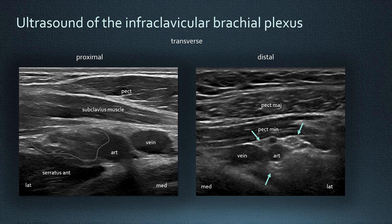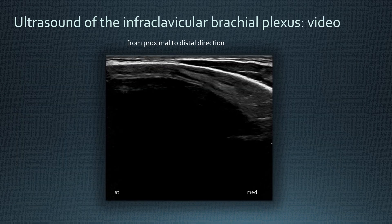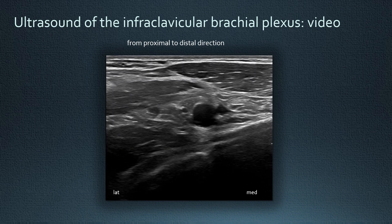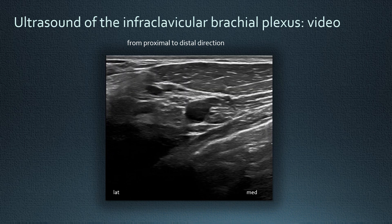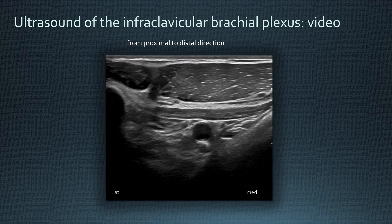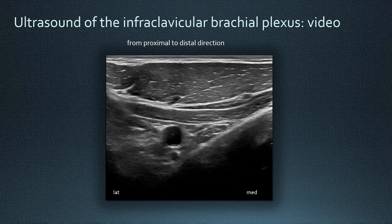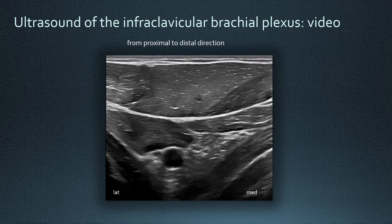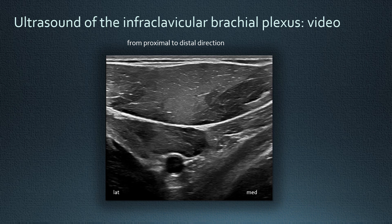You can also see the subclavian vein — so it's plexus, artery, vein going from lateral to medial. The three cords are formed: the medial cord between the vein and the artery, the lateral cord lateral to the artery, and the posterior cord dorsal to the artery. For scanning the infraclavicular plexus, start on the clavicula, drop off the clavicula to see the subclavius muscle and the plexus lateral to the artery, then move slowly down as the cords form around the artery — posterior cord, medial cord, and lateral cord — until you reach the axillary region.